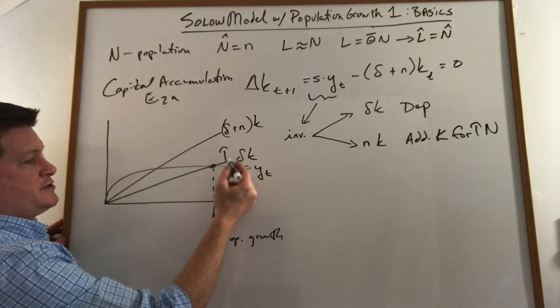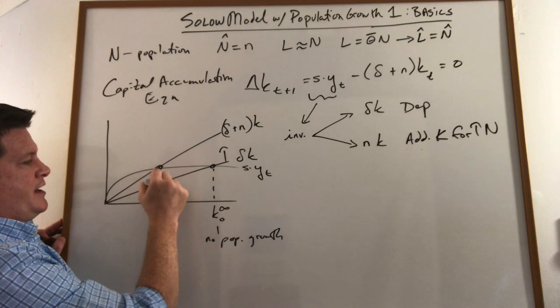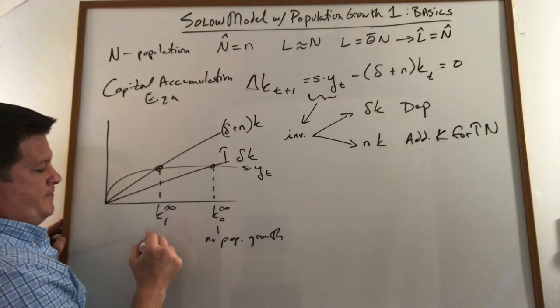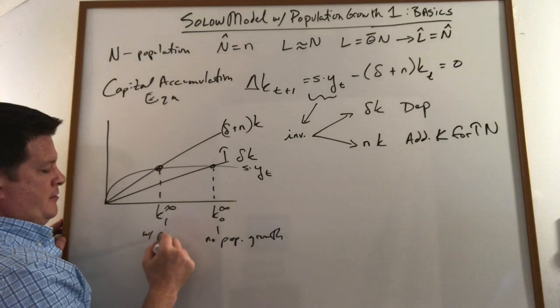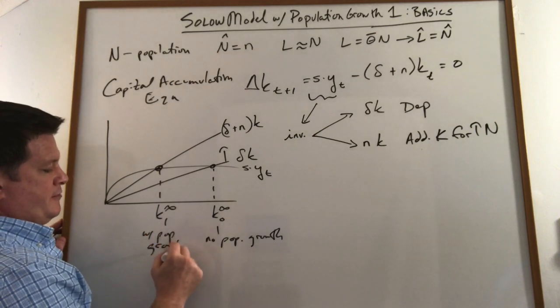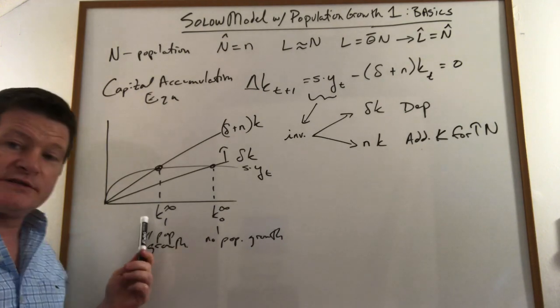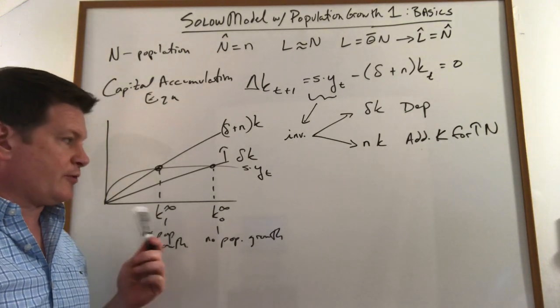But with population growth we actually get a drop with population growth. We get a lower steady state level of capital per worker.